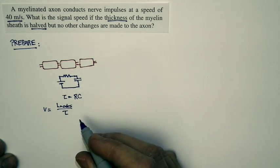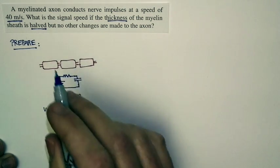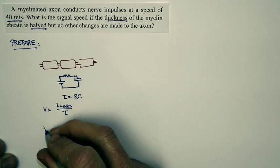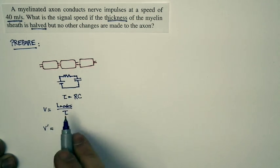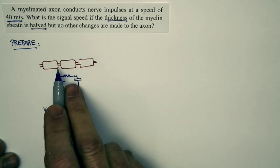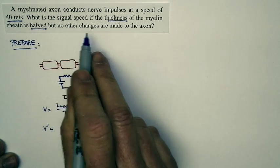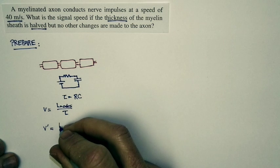And then we want to know if we halve the thickness of the sheath, how does the speed change? Well, when we have our new conduction speed, here's one thing that won't change. The distance between successive nodes, we're told no other changes are made to the axon.